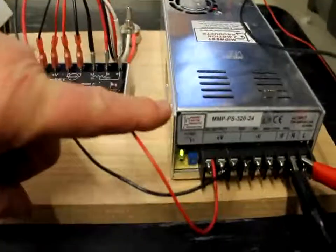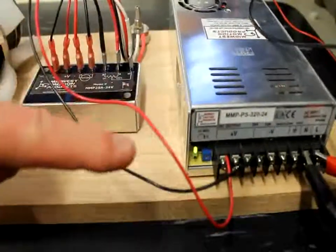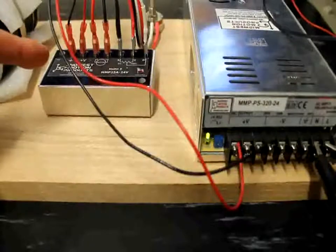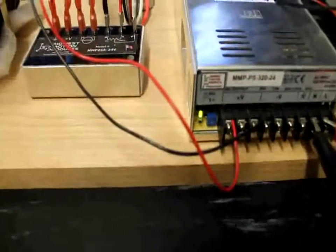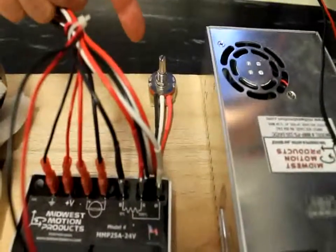a 24 volt, 13 amp DC power supply, which is feeding power to the MMP25A-24V motor speed control, which is adjusted by this single turn 10k ohm speed potentiometer,